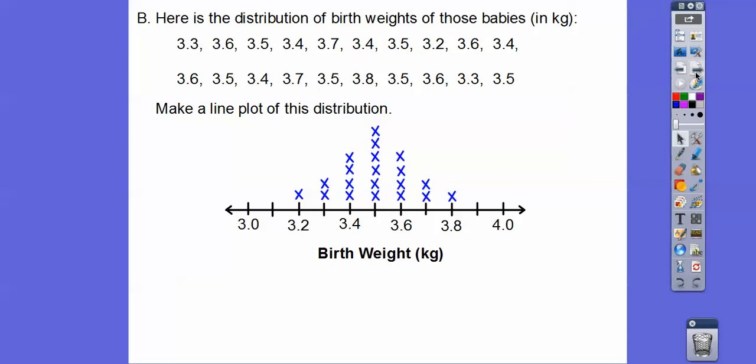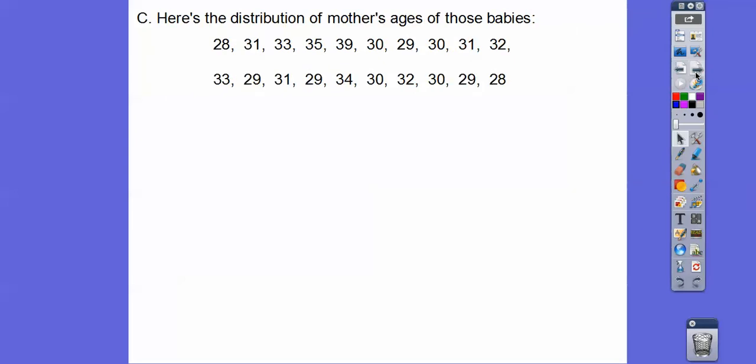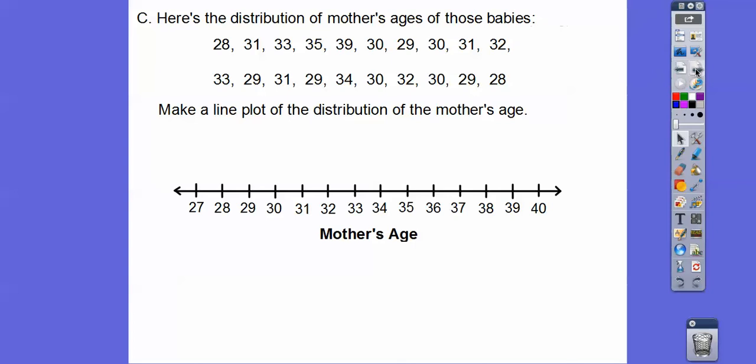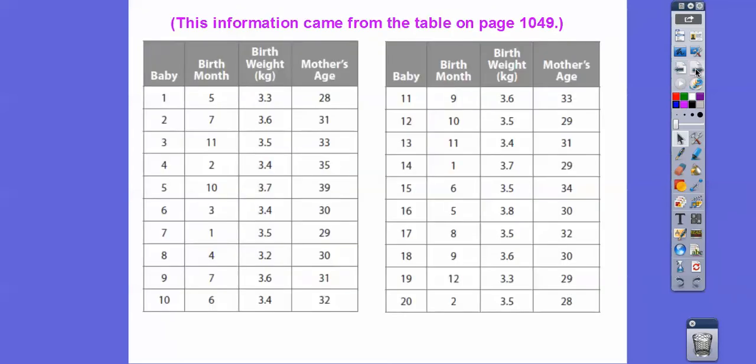All right. So we'll talk about that shape in just a minute. And here's the distribution of the mother's ages of those babies. So I see some mamas that are as young as, oh heck, 28, I think, is the smallest one I see right there. And then all the way up to 39 right there. So let's make a line plot of that distribution right there. So when we do that, we get that right there. And we'll talk about that shape in just a second. All right. So, and then this information, I just didn't want to give you that big old table right there. So because you guys get overwhelmed when you see that.